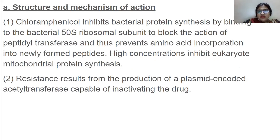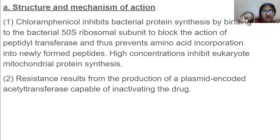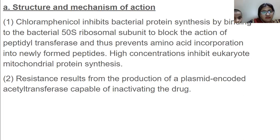Chloramphenicol inhibits bacterial protein synthesis by binding to the bacterial 50S ribosomal subunit to block the action of peptidyl transferase, thus preventing amino acid incorporation into newly formed peptides. High concentrations inhibit eukaryote mitochondrial protein synthesis. Resistance results from the production of a plasmid-encoded acetyltransferase capable of inactivating the drug.